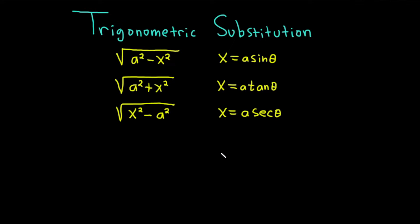Hi everyone, it's the Mathsorcer here with Chegg. In this video, we're going to discuss trigonometric substitution. On the screen, you see all three substitutions. If you have the square root of a squared minus x squared, let x equal a sine theta. If you have the square root of a squared plus x squared, let x equal a tan theta. And for the square root of x squared minus a squared, let x equal a secant theta. With these three substitutions, in theory, you should be able to do any problem.